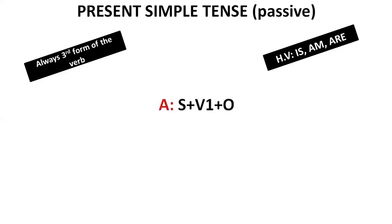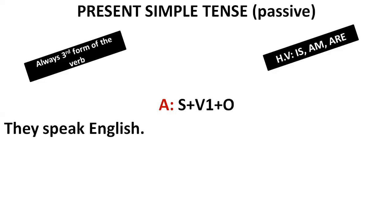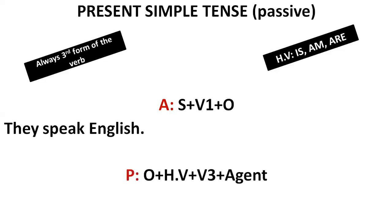Now, if we talk about active, in present simple active, the structure for making a sentence is: Subject + First form of the verb + Object. We also have a sentence: 'They' is our subject, 'speak' is the first form of the verb, 'English' is the object. So 'They speak English' is our active sentence. Now to make passive — for the formation — what will it be? First we put the object.